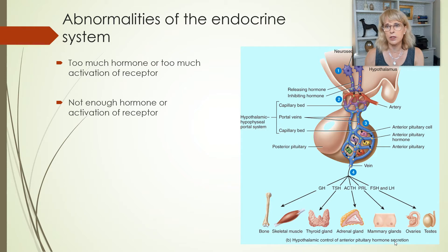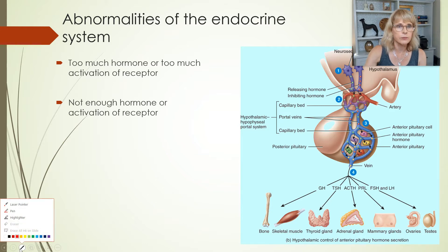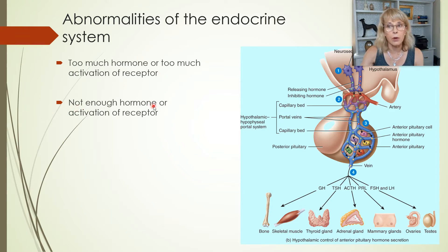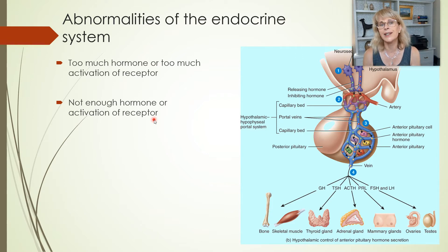We're going to talk about abnormalities of the endocrine system. In general, whenever you're talking about health problems of the entire endocrine system, you're really talking about either there's too much hormone in the system, or there's too much activation of a hormone's receptor. Or the alternative could be not enough hormone, or you've got enough hormone but it's not activating the receptor. This concept of not enough hormone or not enough activation is really important for understanding sugar diabetes.